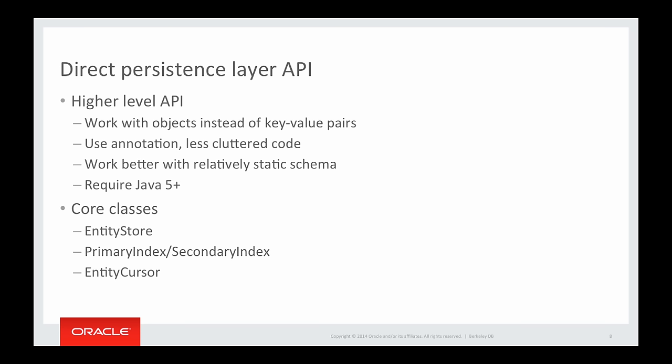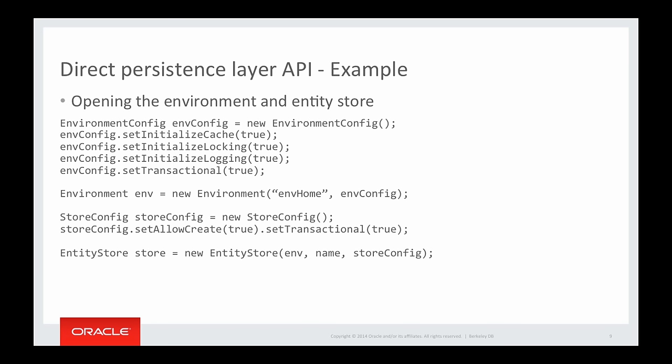The core classes of the DPL API are the EntityStore, PrimaryIndex, SecondaryIndex, and EntityCursor. Opening an environment is the same in the DPL API as in the Key-Value API. However, instead of opening a database handle, you open the EntityStore. You create a new StoreConfig, set up configurations, and create a new EntityStore using the environment and StoreConfig.